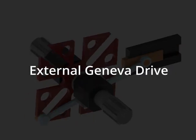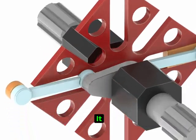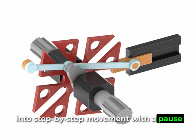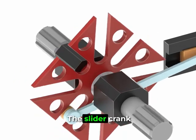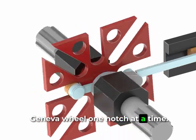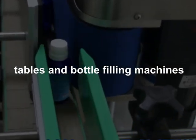First is the external Geneva drive with a slider crank actuator. It changes continuous rotation into step-by-step movement with a pause in between. The slider crank pushes a pin that advances the Geneva wheel one notch at a time. You'll see this in indexing tables and bottle filling machines.